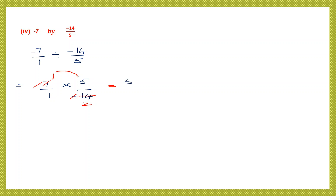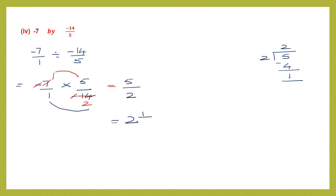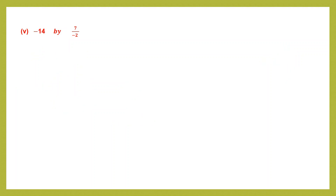Multiply numerators: 1 into 5 is 5. Multiply denominators: 1 into 2 is 2. So 5 by 2, an improper fraction. Converting: 2 goes into 5 twice with remainder 1. Final answer is 2 and 1 by 2.